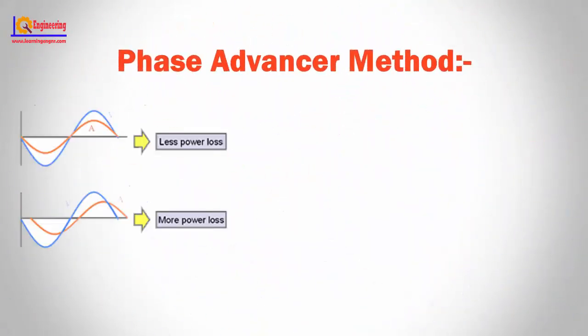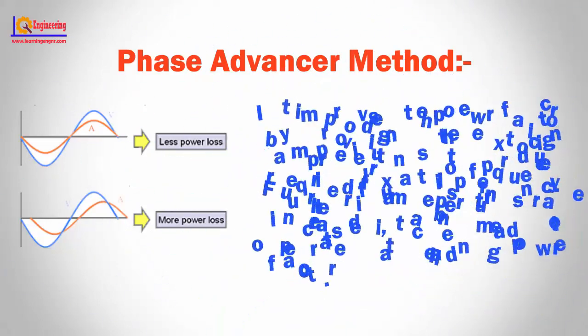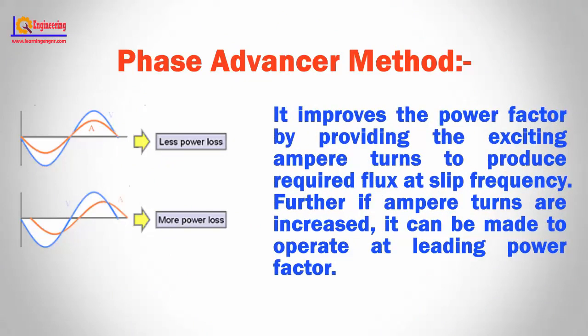Power factor correction by using the phase advancer method. This is an AC exciter generally used to improve the power factor of an induction motor. They are mounted on the shaft of the motor and linked in the rotor circuit of the motor. It improves the power factor by providing the exciting ampere-turns to produce the required flux at slip frequency. Further, if the ampere-turns are increased, it can be made to operate at a leading power factor.